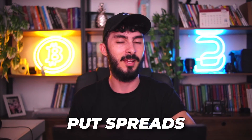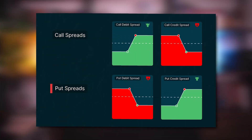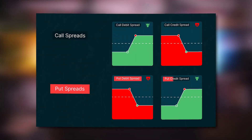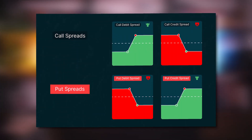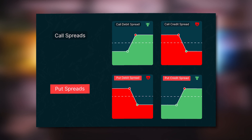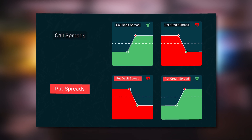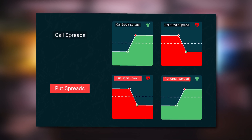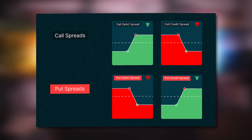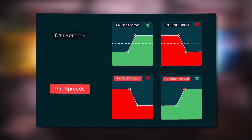Now let's go to put spreads. With put spreads we have two scenarios: a bearish and a bullish. This is just to demystify that everything put-related is bearish and everything call-related is bullish — as you can see, you can also be bearish with calls and bullish with puts, which brings us to the bear put spread.